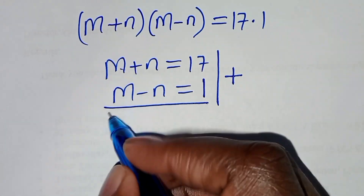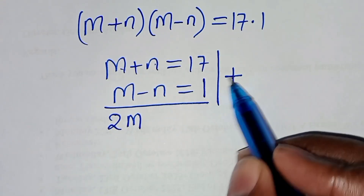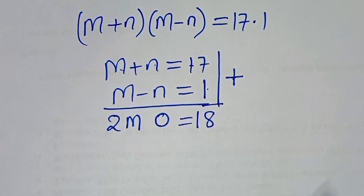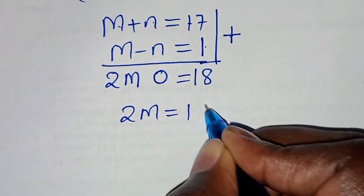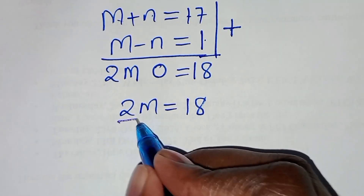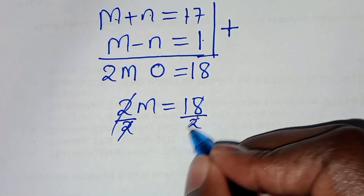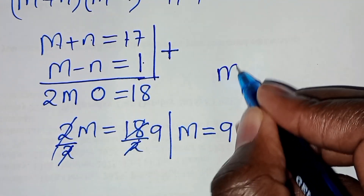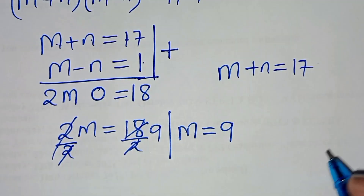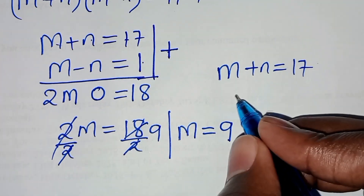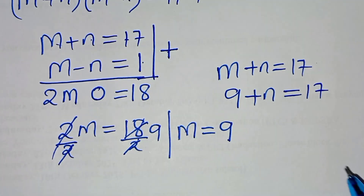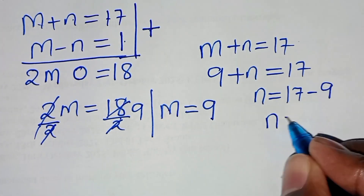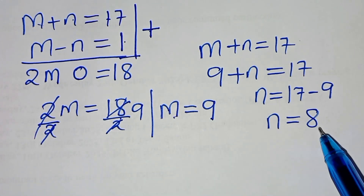So we have the system: m + n = 17 and m − n = 1. Adding these two equations: 2m = 18, so m = 9. Then substituting m = 9 into m + n = 17 gives 9 + n = 17, so n = 17 − 9 = 8. We now have m = 9 and n = 8.